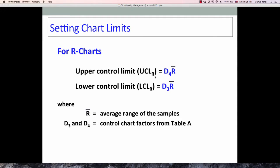The upper control limit can be found through D₄ times R-bar, which is the average value of range. The lower control limit is D₃ times R-bar. D₃ and D₄, as I said, can be found through the factor table based on the sample size.